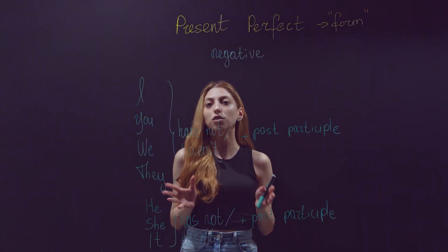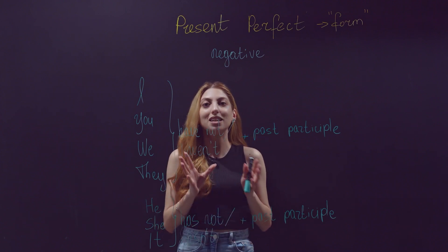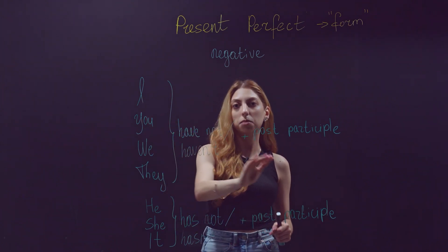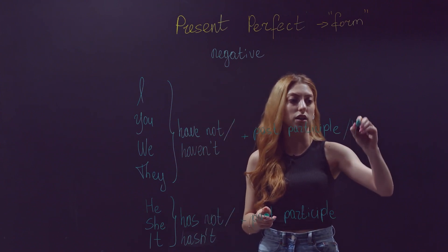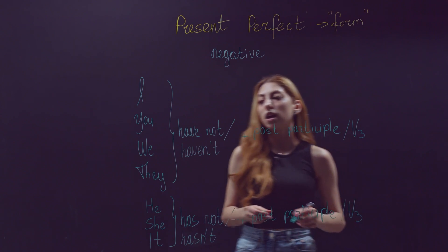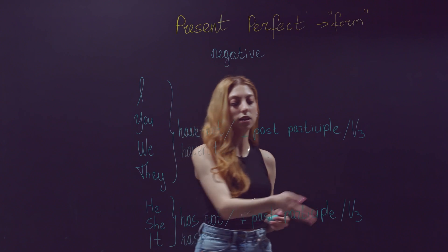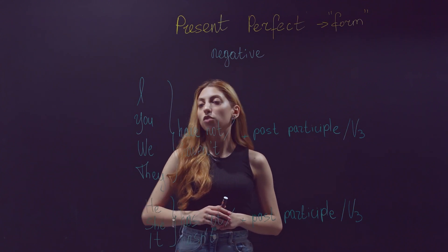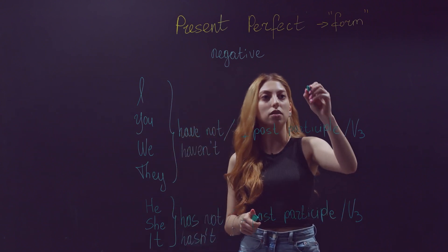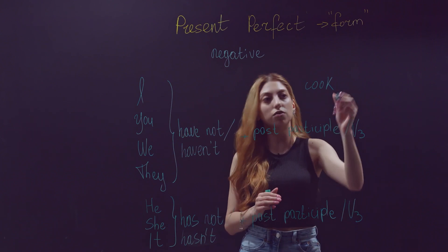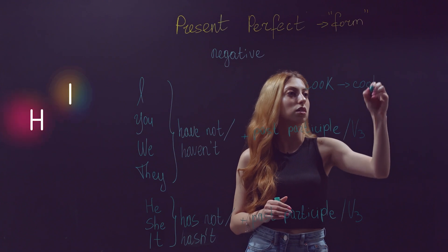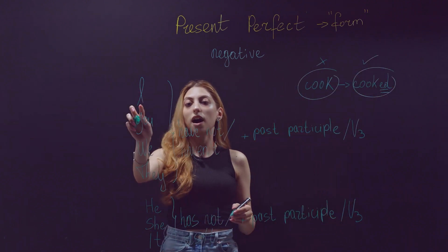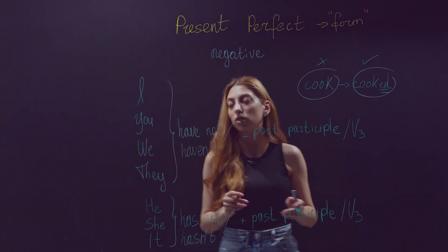Now let's concentrate on the negative. How can we form the negative structure? We need to use 'not' with 'have', and the same applies to 'has'. So I can say 'I have not' + past participle, and with he, she, or it I need to use 'has not' + past participle. For example, with the regular verb 'cook': the right version is 'I have not cooked', for example, the cake.